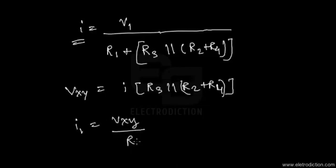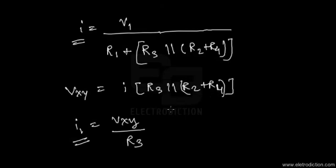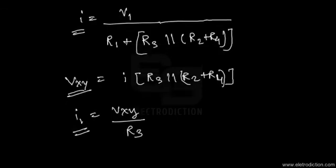To find I1, we divide VXY by R3. If you simplify the denominator to find I, and simplify the entire resistor network expression, you'll get the detailed expressions for VXY and I. With those values, you can obtain the exact value of I1 by substituting them into this expression.